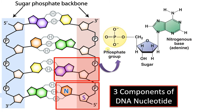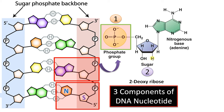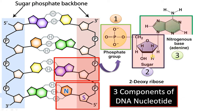The first part is a phosphate group. Then there is a pentose sugar, which is a deoxyribose sugar in DNA. As you can see, in the second position there is only hydrogen — that is, without oxygen — that's why it is called deoxyribose. The third part is a nitrogenous base.